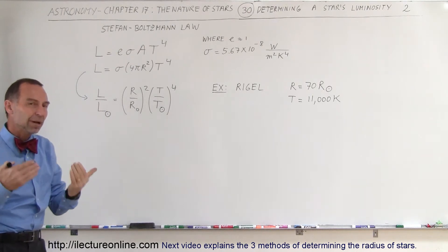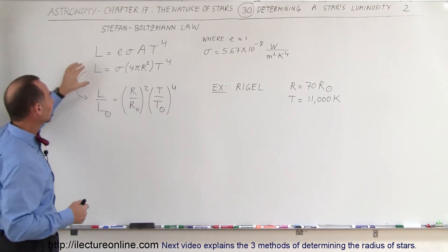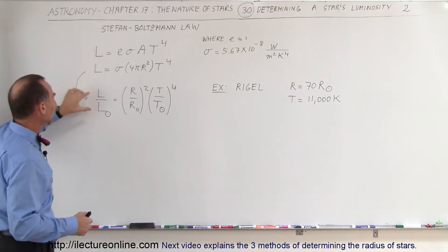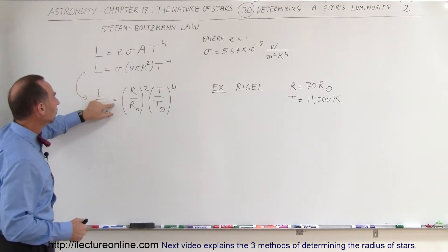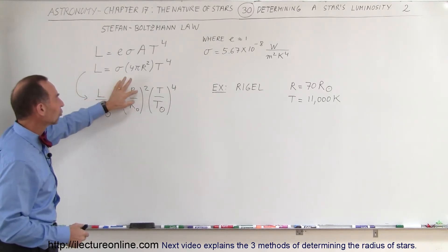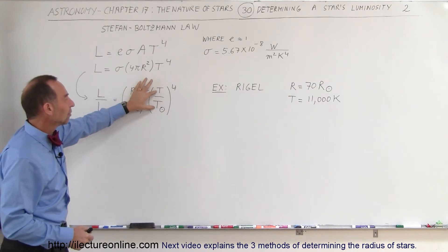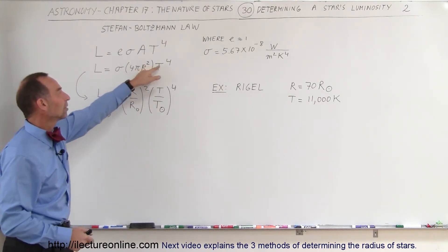If we compare that to the luminosity of the sun, we could say that the luminosity of the star divided by the luminosity of the sun is equal to the ratio of the radii squared times the ratio of the temperature to the fourth power.